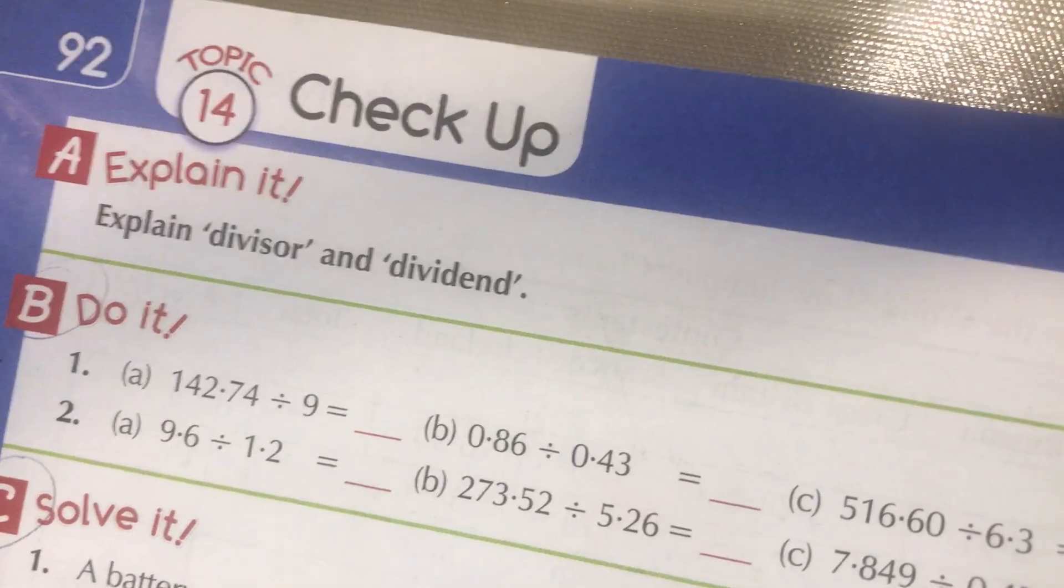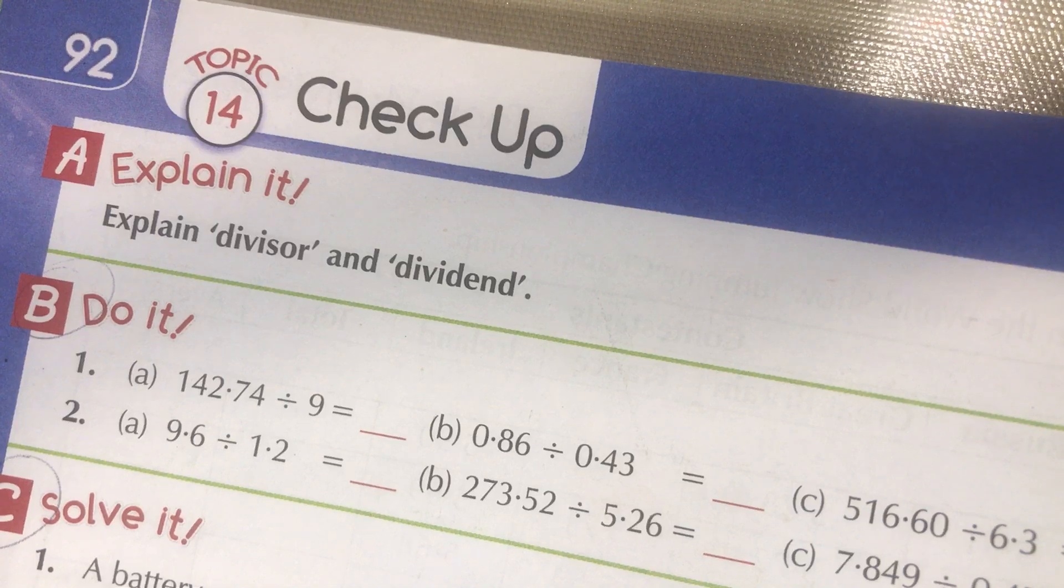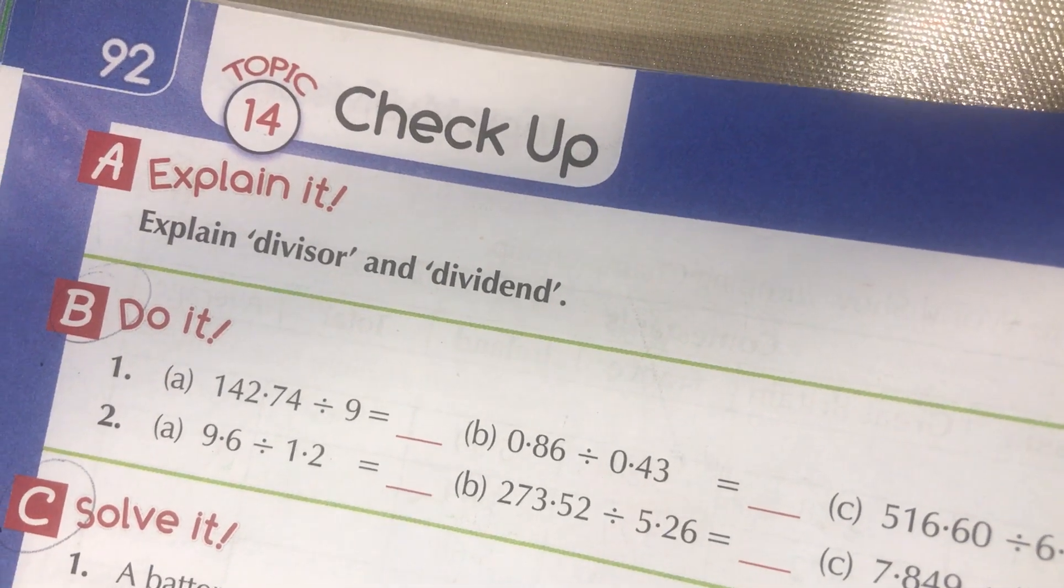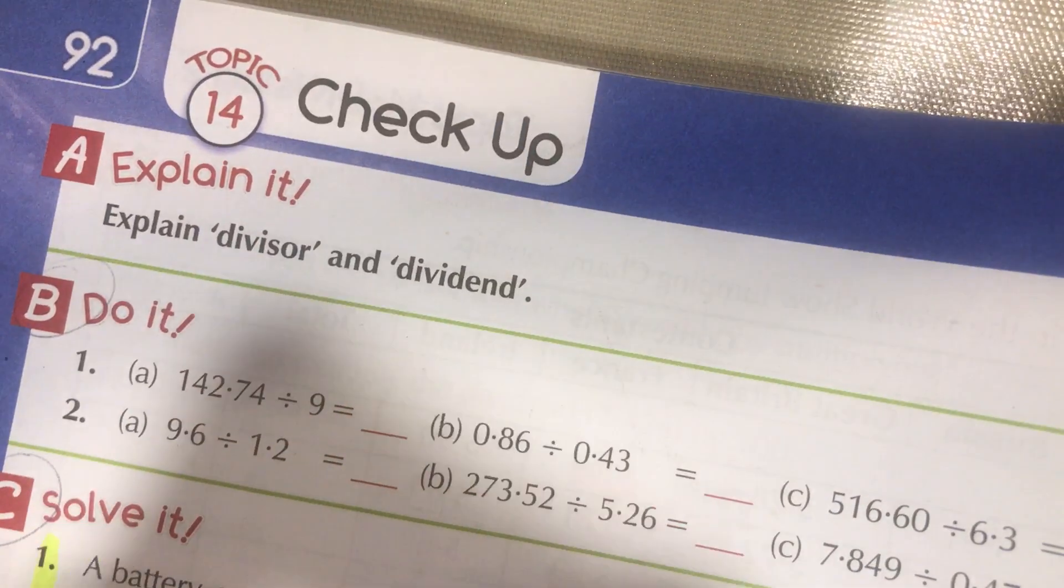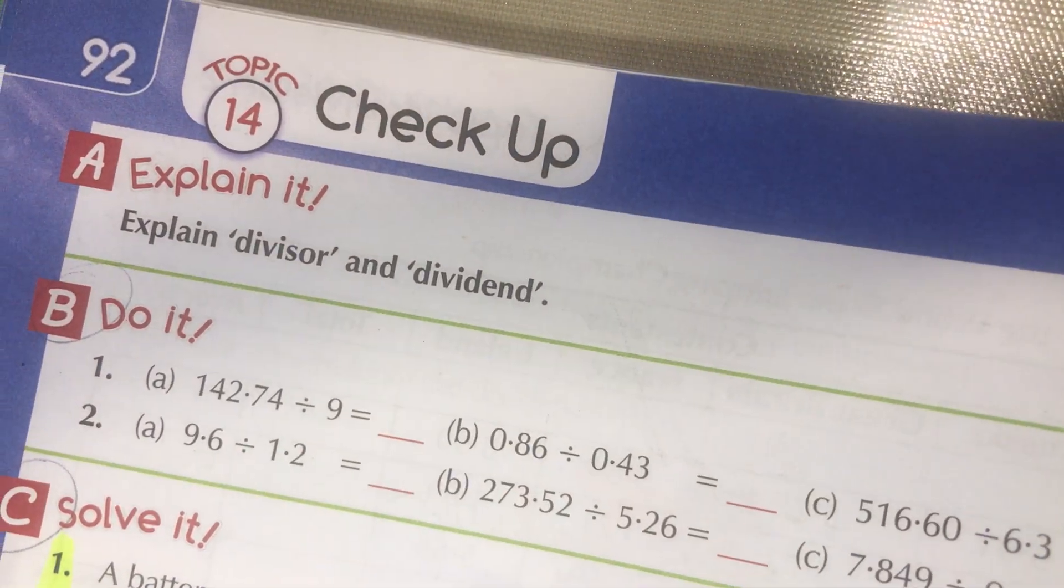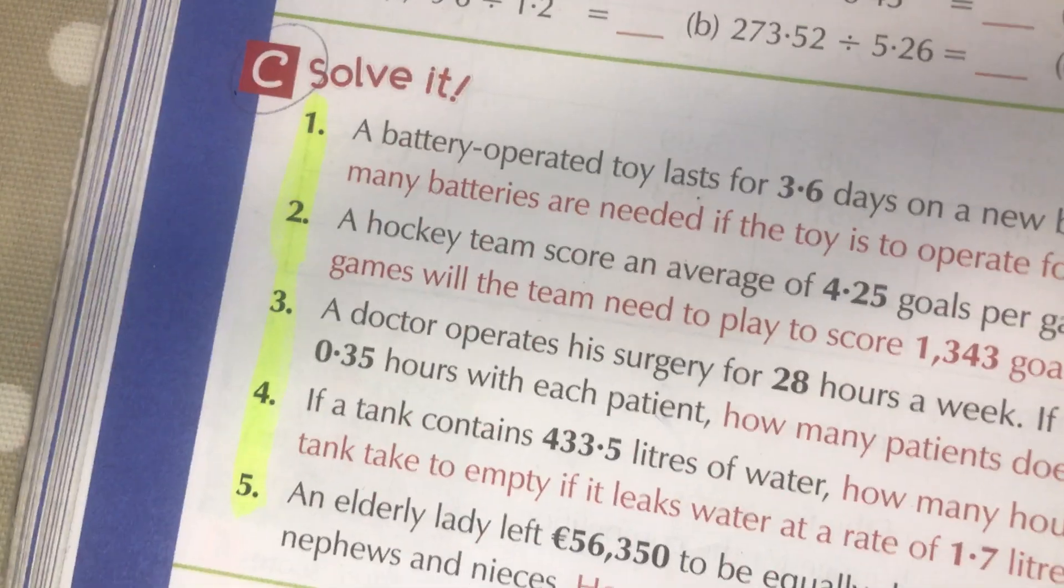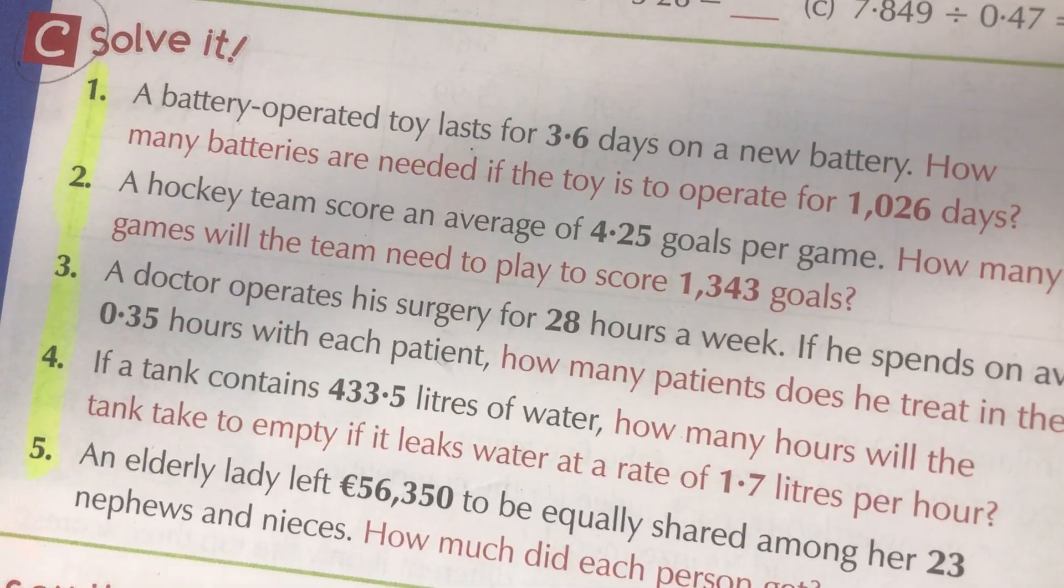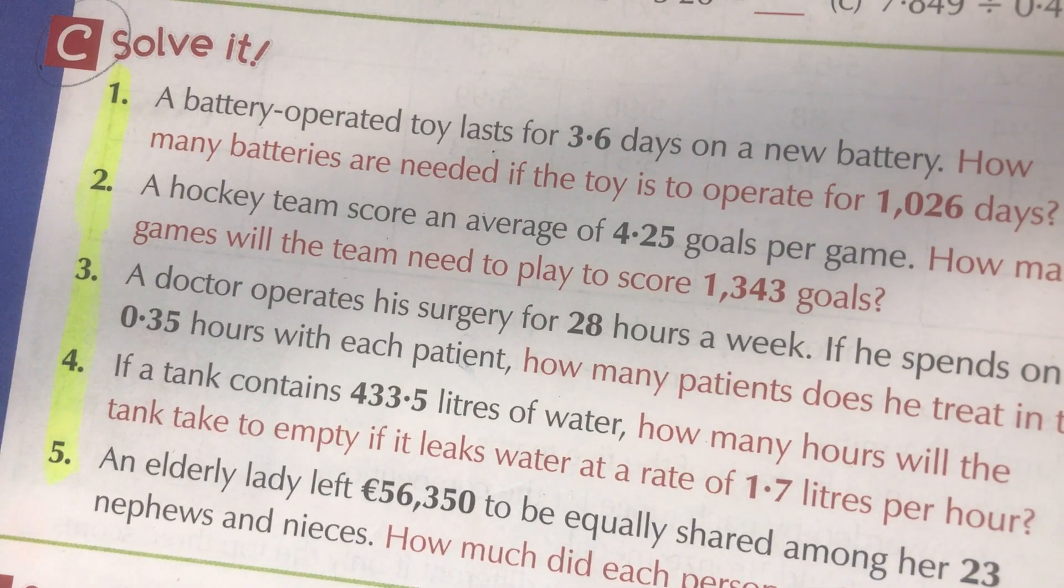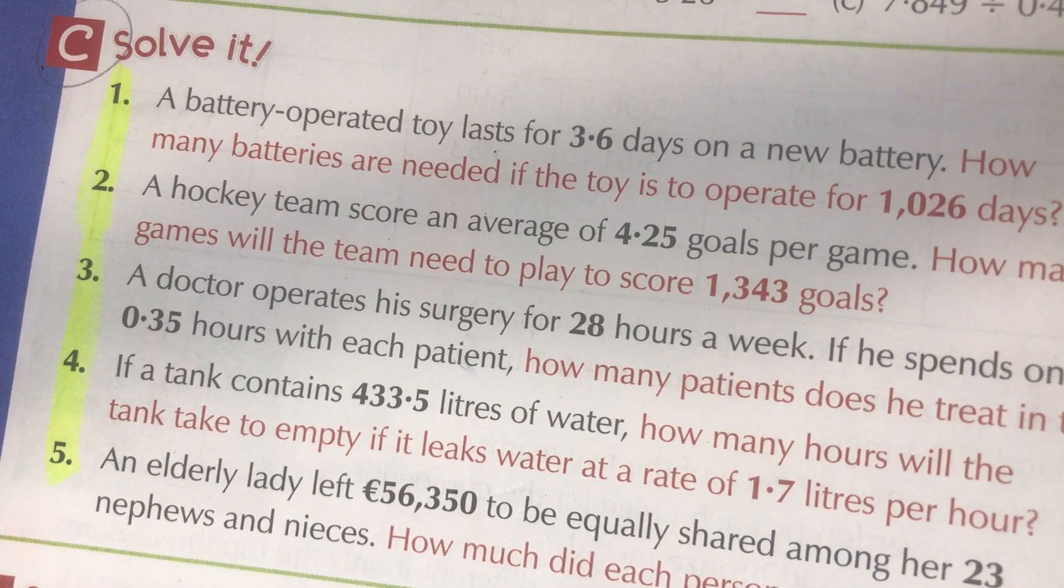So we're going to the checkup section of the Planet Maths, page 92. All we're going to do, and I should have these highlighted, are 1 to 5. I'm not going to explain these for too long because you did brilliantly yesterday at them. Just those five, five long division. Yesterday the six I gave you, no problems at all, people were flying with them.